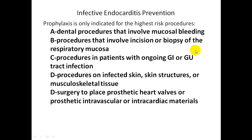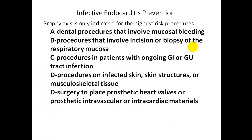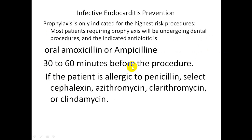Important distinction: the first group is patients with underlying disease at high risk for infective endocarditis; the second group is high-risk procedures. Not every procedure requires prophylactic antibiotics. High-risk procedures requiring prophylaxis in high-risk patients include: dental procedures involving mucosal bleeding, procedures involving incision or biopsy of respiratory mucosa, procedures in patients with ongoing GI or urinary tract infection, procedures on infected skin or musculoskeletal tissue, and surgery to place prosthetic valves or prosthetic intravascular or intracardiac material.